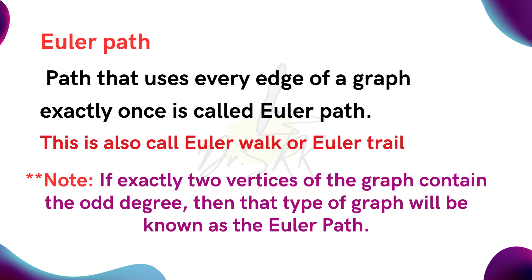Now, an important note to discuss: in a given graph, if exactly two vertices contain an odd degree, then the type of graph is known as Euler path. So if a graph has exactly two vertices with odd degree, then an Euler path exists in that graph.